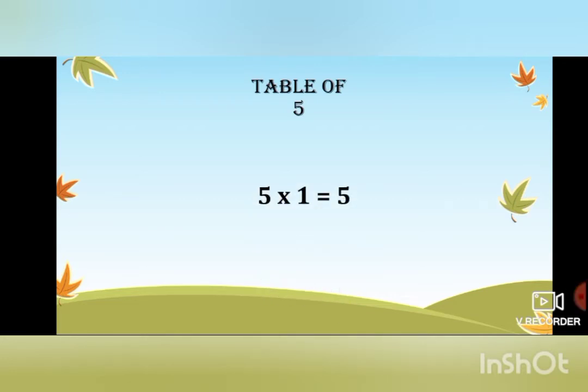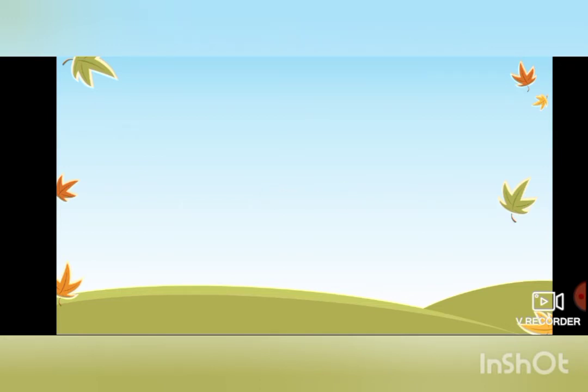Let's learn the table of 5 slowly and well. I want you to first listen to me — do not repeat it. Five ones are 5, five twos are 10.